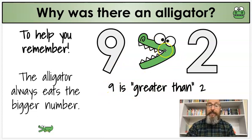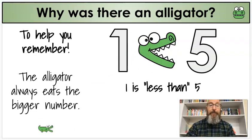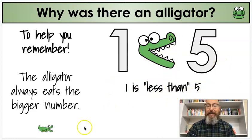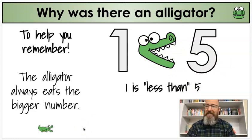Nine is greater than two — the alligator is eating the nine because it's bigger. Or you might say one is less than five — look at that alligator going after the five, because five is larger. One is less than five. This is why I say we're making a sentence, because the sentence lets me know my answer is correct. Just make that alligator eat the bigger number. If that helps, use it. If you don't need it, that's fine too.